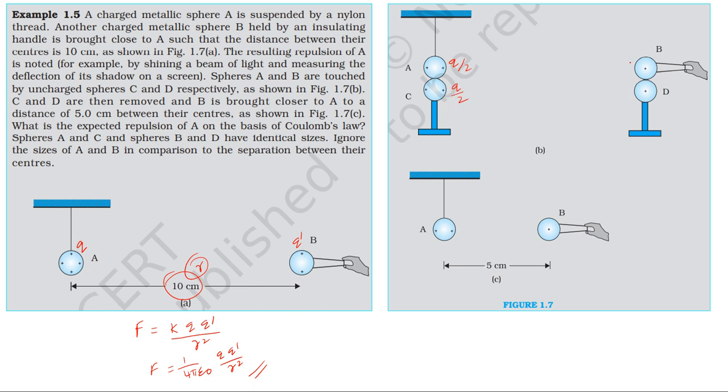B and D touch, so B and D equal charge is shared. Initially B is q' and D is 0. So q' by 2 charge is distributed. D is q' by 2. If C and D are removed, then A will be q by 2.